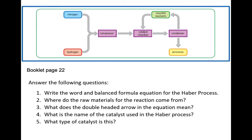Turning to page 22 of your booklet, you are given a flow diagram for the Haber process. Nitrogen and hydrogen are fed into a compressor, then the gases are passed into a catalyst chamber containing iron. The product moves on to the condenser, out of which ammonia is produced. Any nitrogen and hydrogen that have not reacted are recycled back into the catalyst chamber.